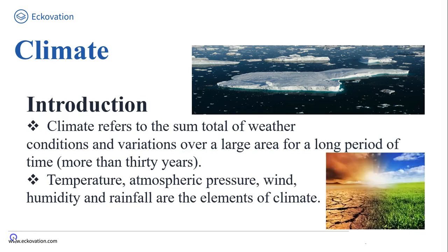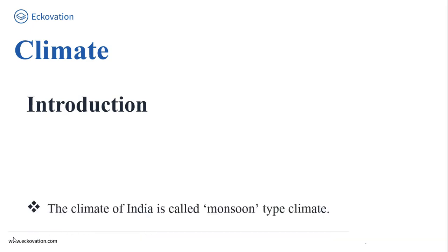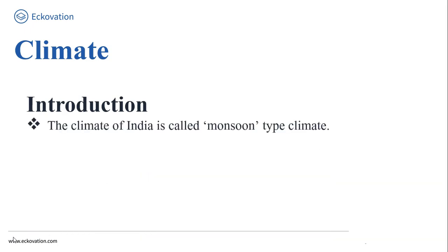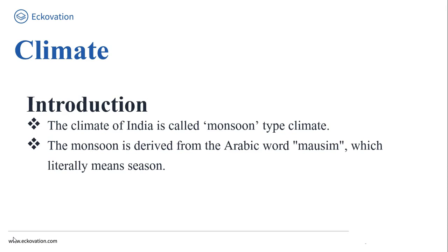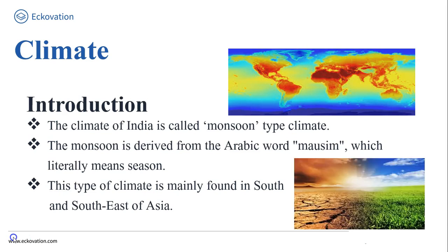Friends, do you know? The climate of India is also called monsoon type climate. Basically, the word 'monsoon' is derived from the Arabic word 'mausim', which literally means season. My dear friends, this type of climate is mainly found in south and southeast Asia.